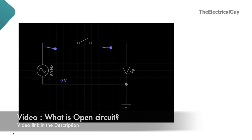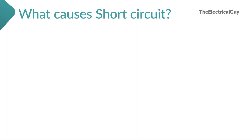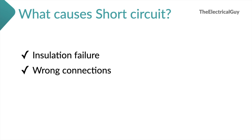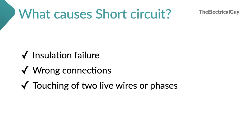Now, what causes a short circuit? Short circuit can happen because of the following reasons: insulation failure, wrong connections — if someone connects the wrong wire to the wrong point, a short circuit can happen. It can also happen because of the touching of two live wires or phases, or if you connect the positive and negative terminals of a battery to each other, which will cause very high current to flow through the conductor and battery.